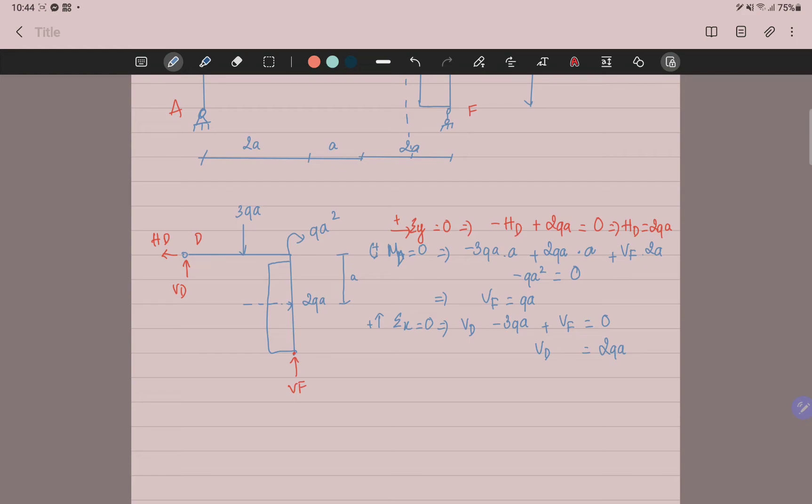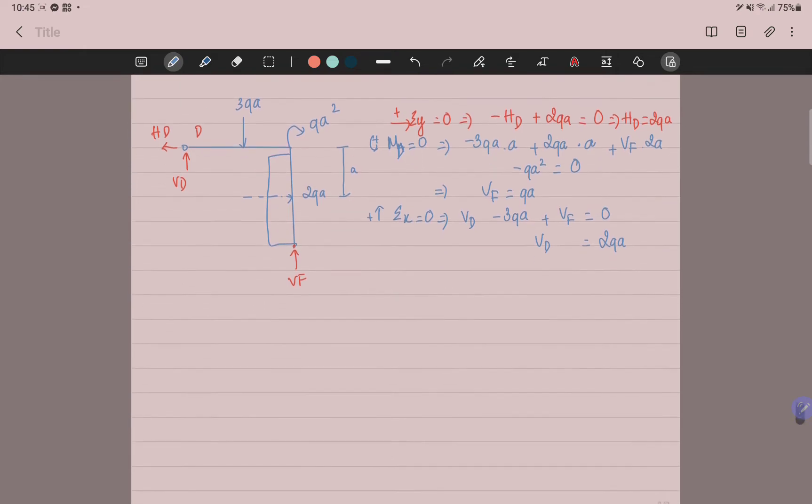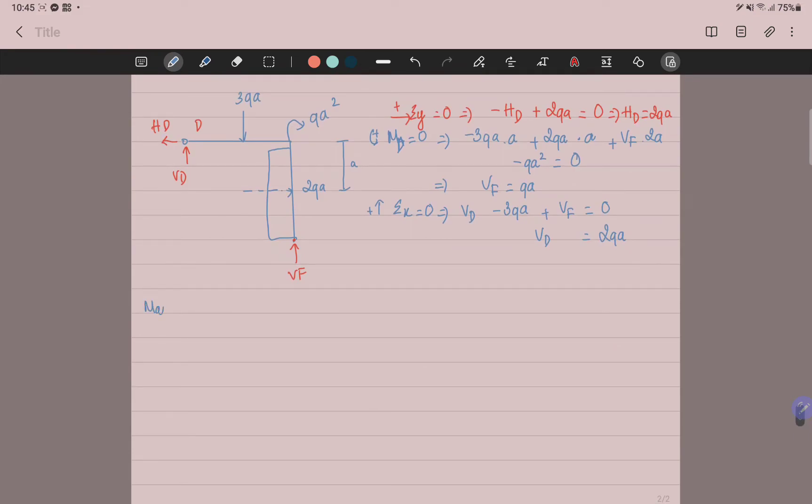When you calculate the HD and VD in the subsystem, you should apply it on the main system with the same value and the opposite direction. I already told you. In the main system.